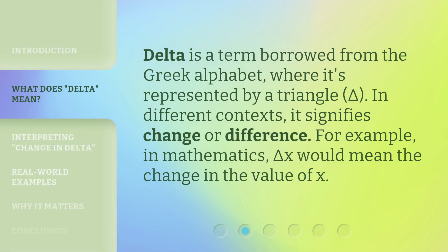Delta is a term borrowed from the Greek alphabet, where it's represented by a triangle — delta. In different contexts, it signifies change or difference. For example, in mathematics, delta x would mean the change in the value of x.